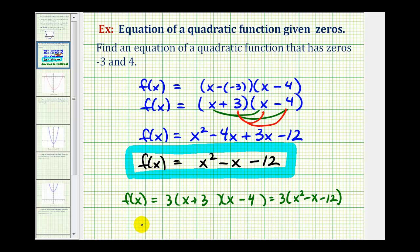And now we would distribute the three. So another possible quadratic function with the same zeros would be f(x) equals 3x squared minus 3x minus 36.